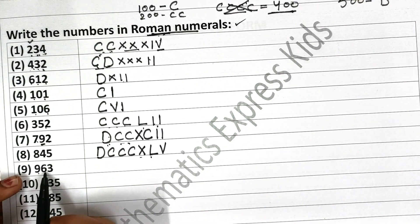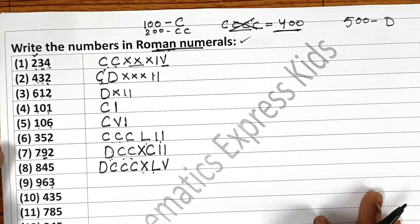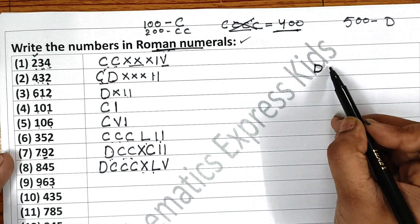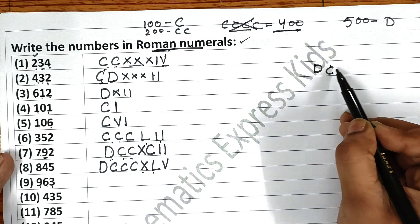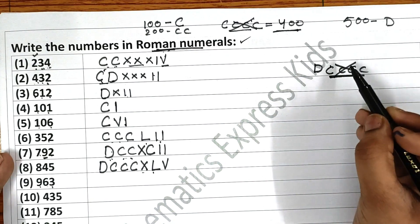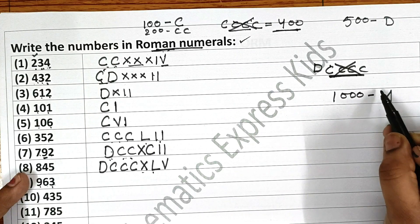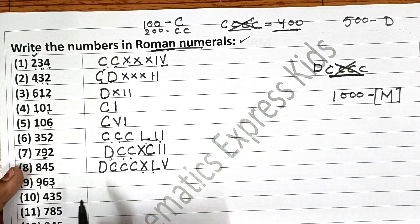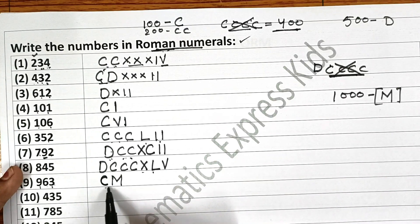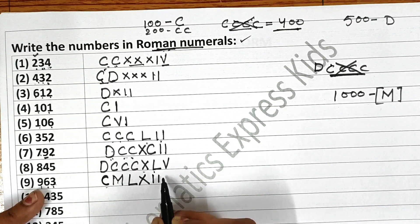Now see 963. This is very important. Before writing 900, you must know how to write 1000. We can't write 500 plus 400 as DCCCC — that would repeat C four times, which is against the rules. We can't repeat any numeral more than three times. So before writing 900, we must know that 1000 is M. So for 900, I write 1000 first and subtract 100 from it — that gives CM. Now for 63: first write 50, then add 10 to it for 60, and then write 3 as III.